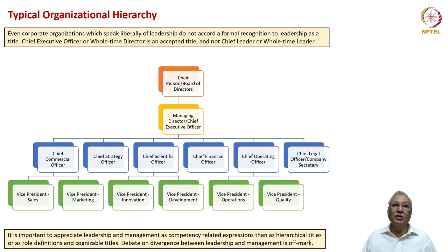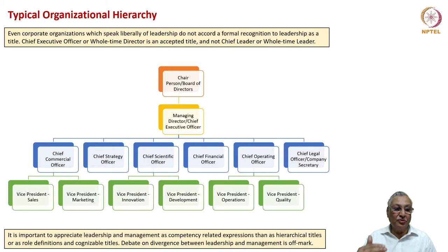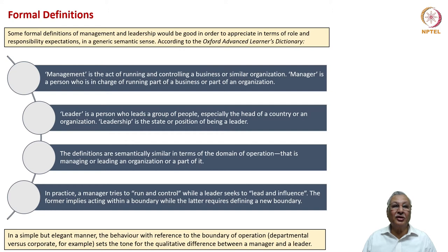Then we have the CXO level: chief commercial officer, chief strategy officer, chief scientific officer, chief financial officer, chief operating officer and chief legal officer or company secretary. Each of these CXOs has their own reportage. We can say that leadership exists from the level of CXO and above, whereas senior management exists at the vice president level, and middle and junior management exist at levels below.